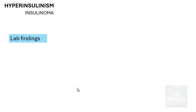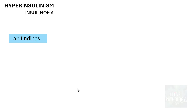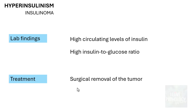For diagnosis, laboratory findings include very high circulating levels of insulin. Most importantly, the insulin-to-glucose ratio will be very high. Treatment involves surgical removal of the tumor, which resolves all symptomatology and normalizes insulin levels.